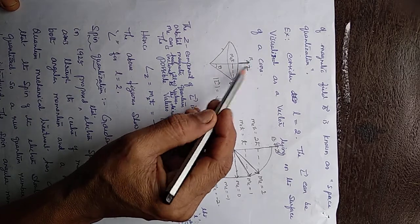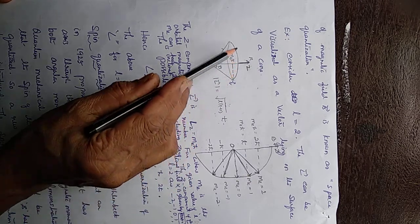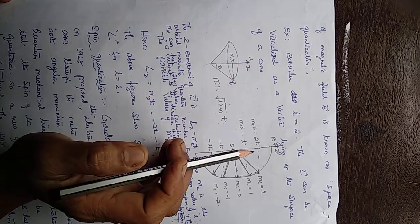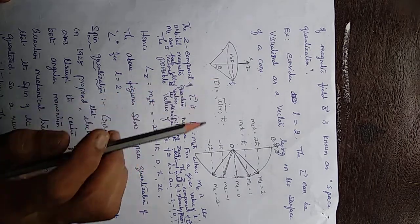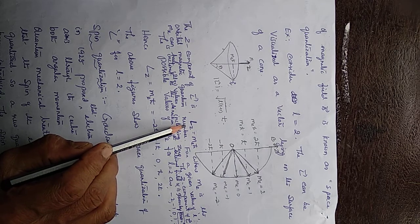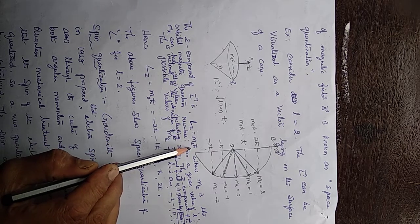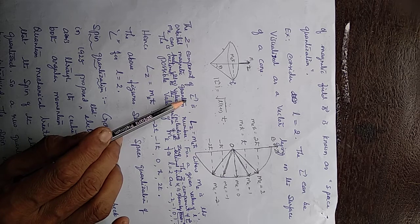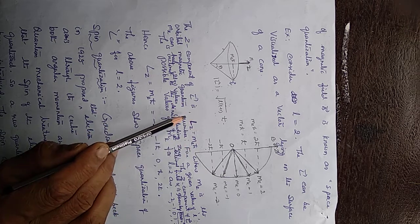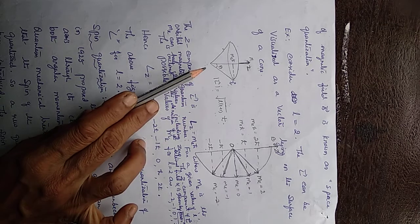Suppose a magnetic field of strength B is applied along the Z direction. The electron of orbital angular momentum L rotates about this field, so the L vector rotates about the field direction. The Z component of this orbital angular momentum, L_Z, is quantized — it must equal an integral multiple of h-bar. The Z component of L is given by L_Z equal to M_L times h-bar.